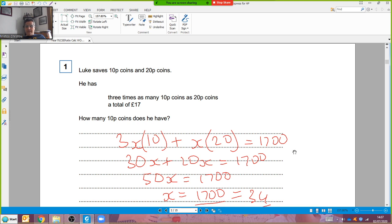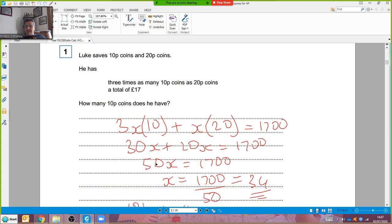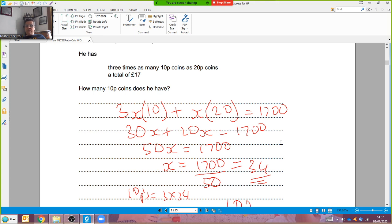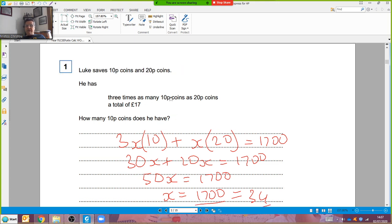Now all together, 50 lots of something comes to 1700. Divided by 50, I've got 34 somethings, 34 heaps of coins, either 10s or 20s.